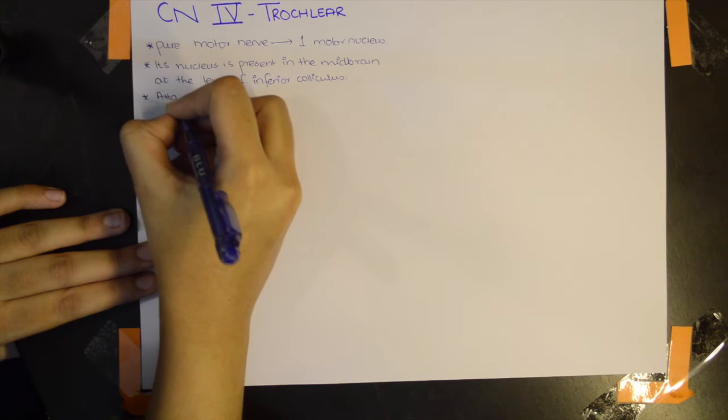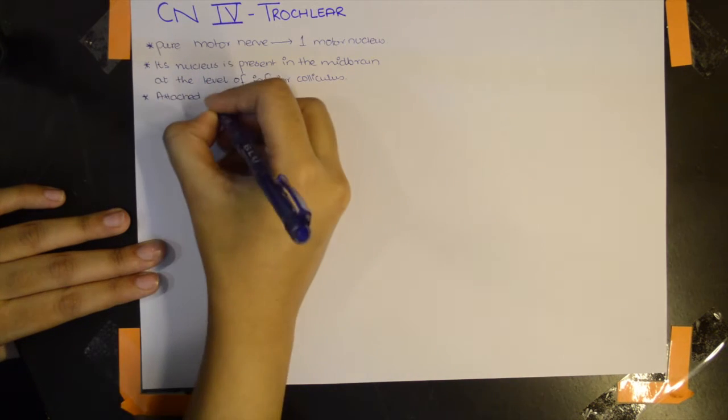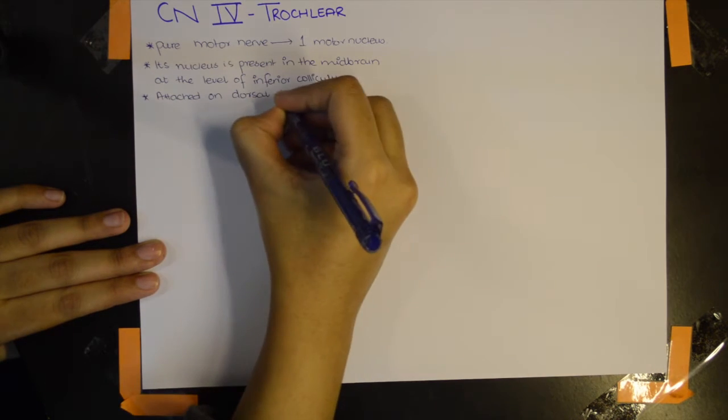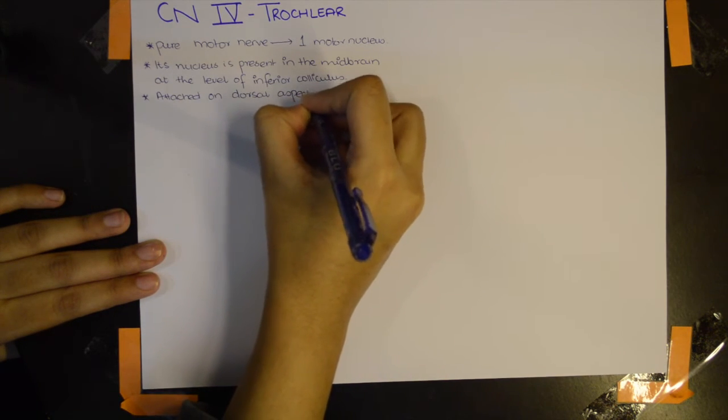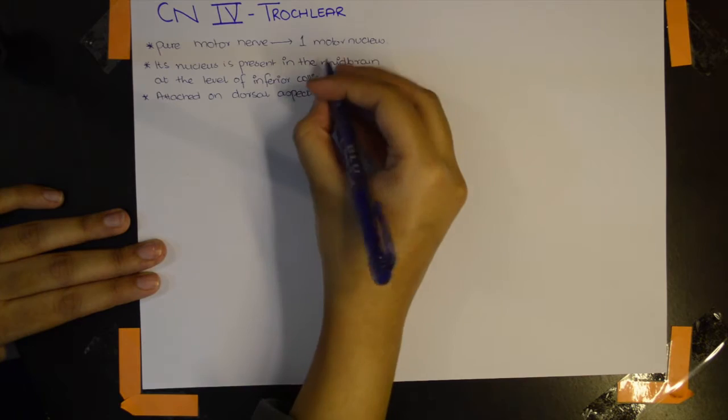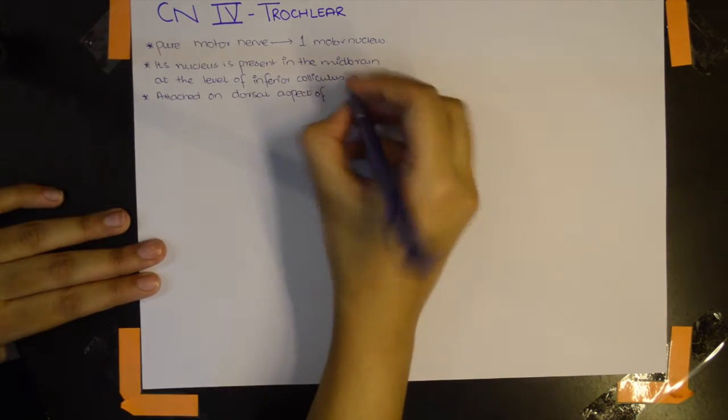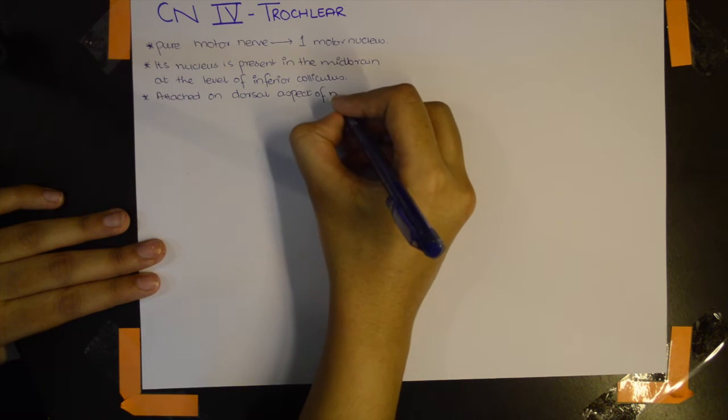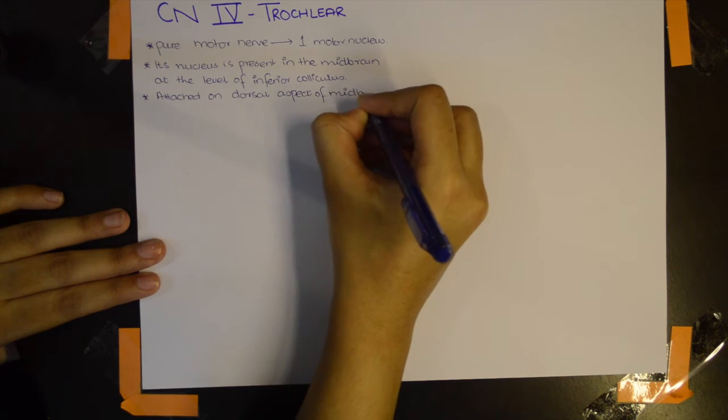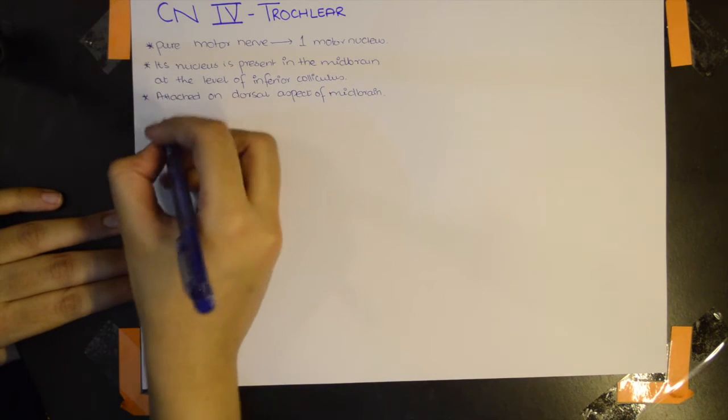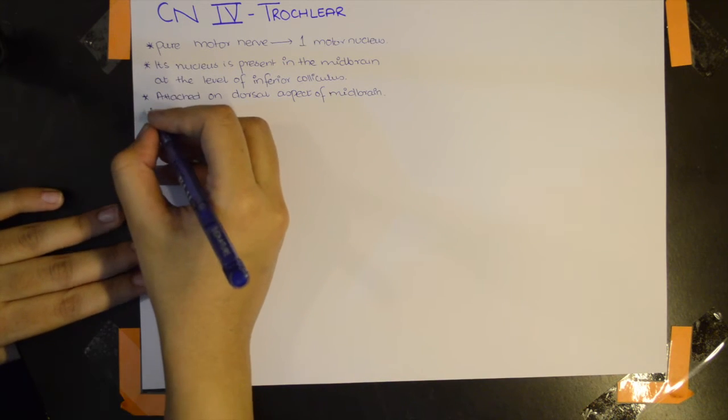It is attached on the dorsal aspect of the midbrain. This is an important thing to know about this nerve—that it is attached on the dorsal aspect of the midbrain.